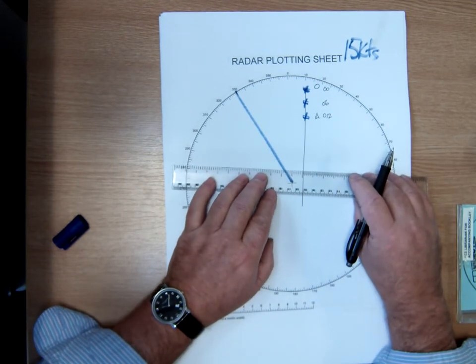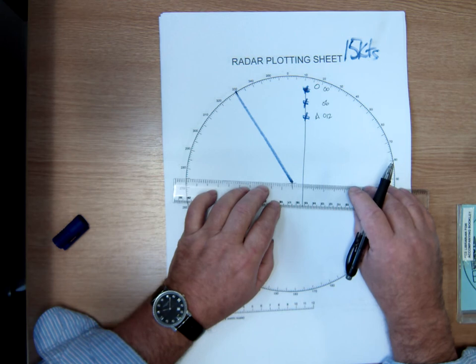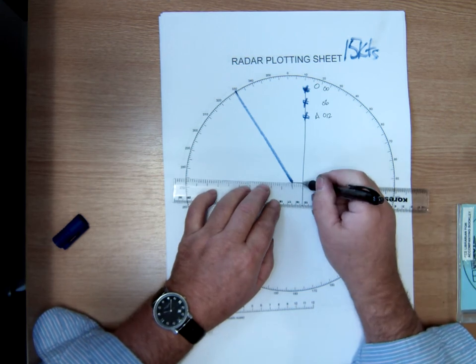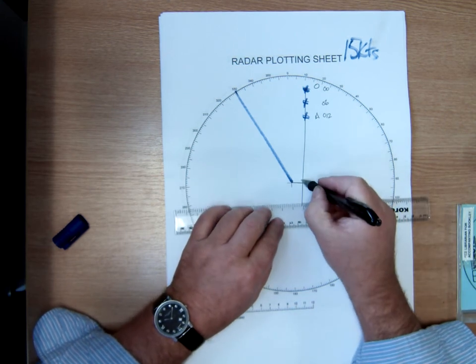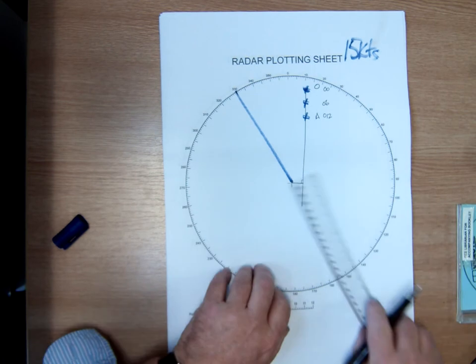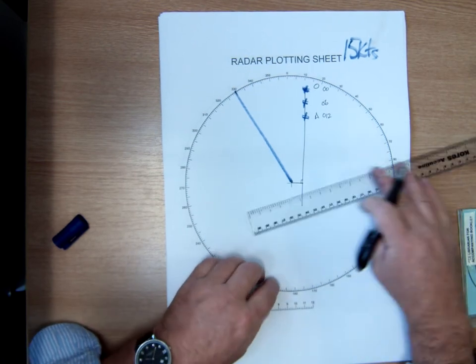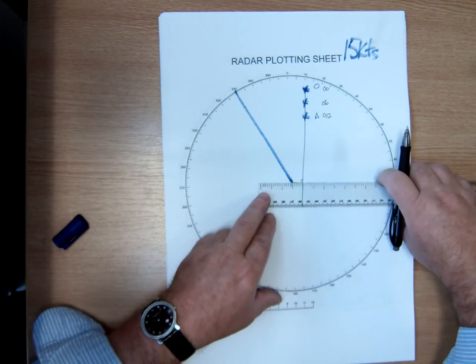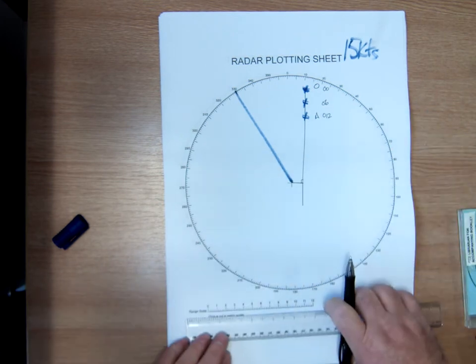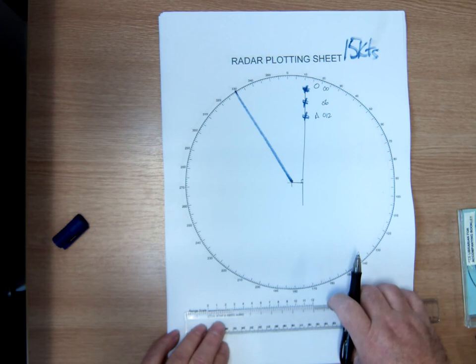Then I can see that would be her CPA. So what I need to do to find the CPA is I just need to drop a right angle there. So a right angle, that's going to be the nearest point of approach, the closest point of approach.